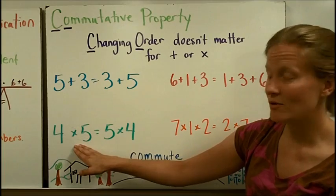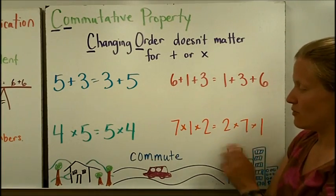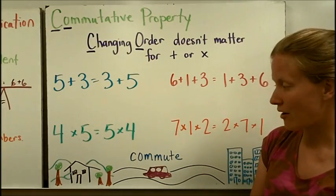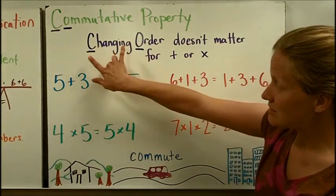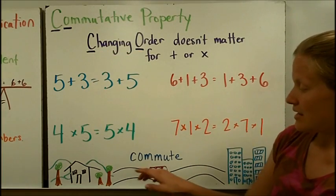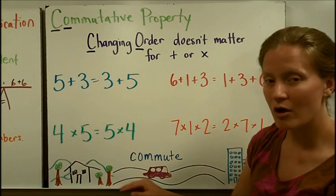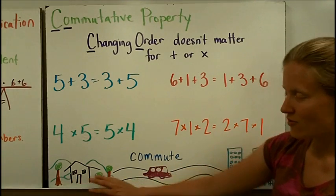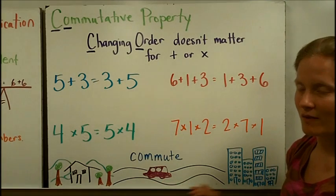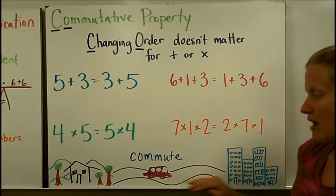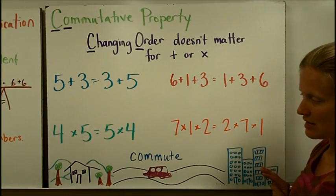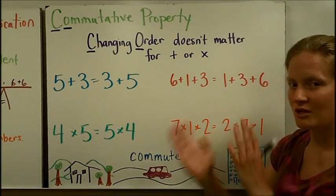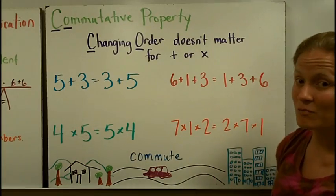The same works for multiplication facts — each side is going to be worth 20, and here each side is going to be worth 14. Changing the order in the commutative property doesn't matter. One way to remember this is thinking about a long commute: if someone lives far away from work, they commute back and forth. That back and forth might remind you of the switching of numbers to represent the commutative property.